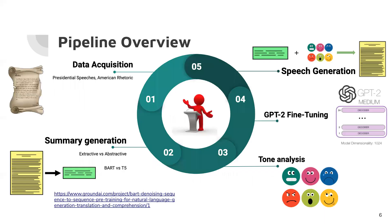So next, we'll move on to the implementation steps. Here is an overview of the five-step pipeline, which we'll go over in the following slides. We first generate a summary and analyze the tones of the acquired speeches as metadata, before fine-tuning them with speeches as labels using GPT-2 medium. The end results are auto-generated speeches once we input summary and tone. We analyze the results using both test data and summaries we came up with ourselves.